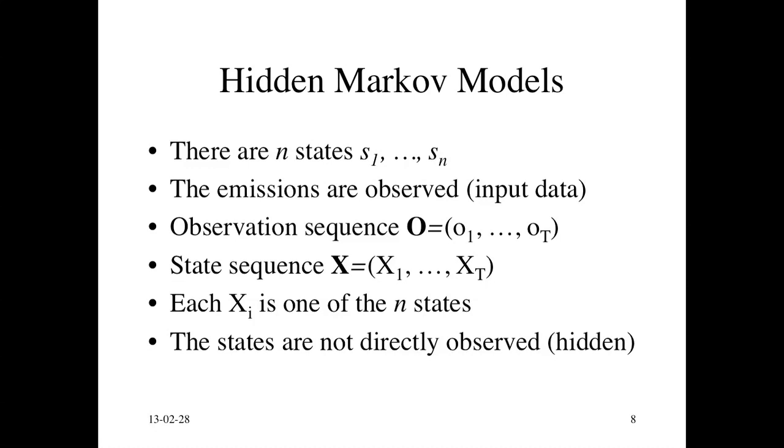And the important thing, the reason why it's called a hidden Markov model, is that the states are not directly observed, especially in the test data. When you're looking at new data, you want to label them, the states are not observed.